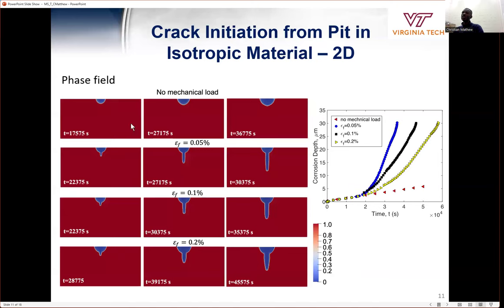So this is the evolution of the phase field variable at different time and also at different film rupture values. The first load, there is no mechanical load, so there is no pit-to-crack transition. We only have a pit growth, but in the rest, where there is a different type of film rupture values, we have different evolution of pit-to-crack transition or evolution of phase field variables, as you can see.